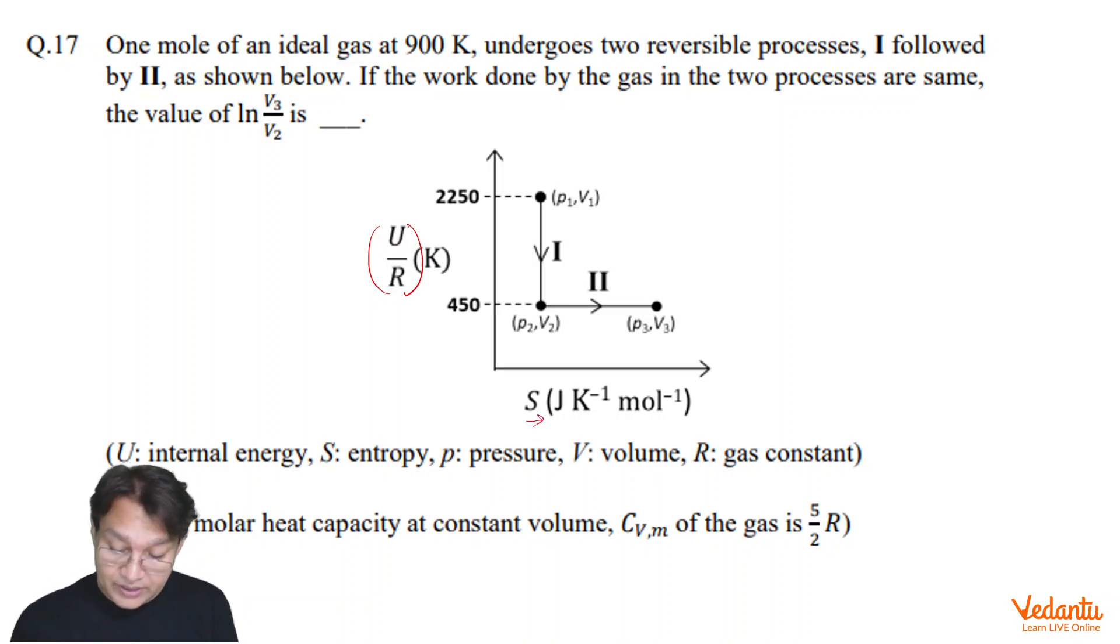But then when you see it in applied thermodynamics, since it is a straight line, that means entropy in the first process is constant. And that has given us a clue that if entropy is constant, it must be a reversible adiabatic process, for which delta U equals W, because Q is always equals to 0.